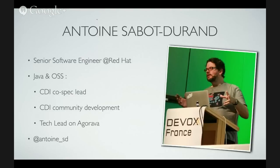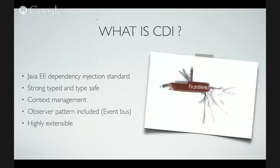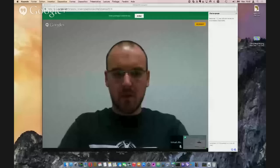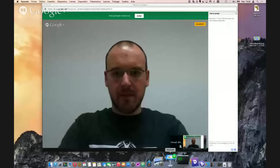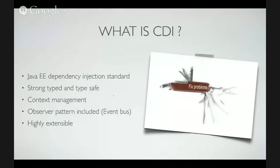You can reach me on Twitter with this handle. So what is CDI? CDI is the integration of the concept of dependency injection in Java EE. The specific feature of CDI is that it provides a strong type and type-safe way to inject components. It also provides context management — that's the 'context' part of Contexts and Dependency Injection. You also have for free in CDI an observer pattern. It is very highly extensible — you have the portable extension concept that allows you to do a lot of things with CDI.